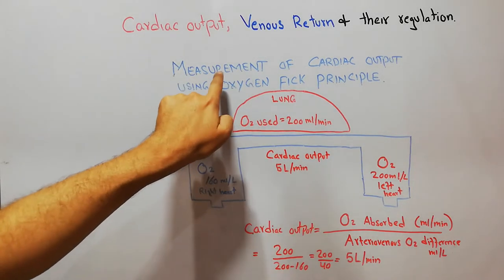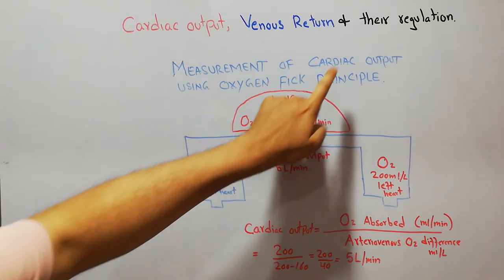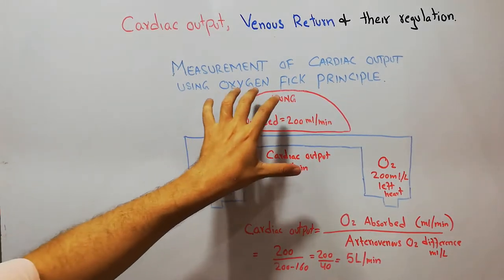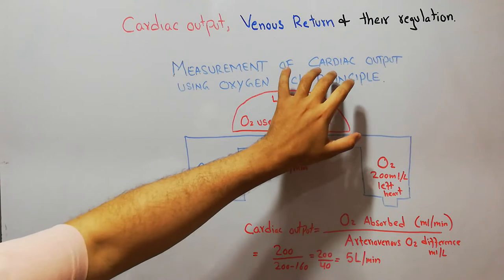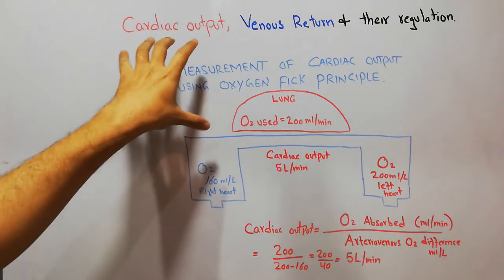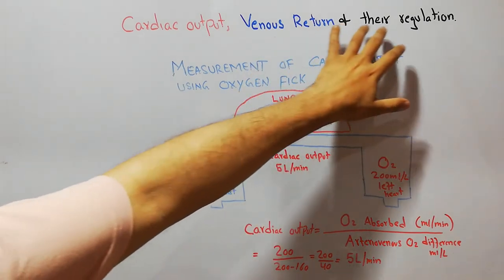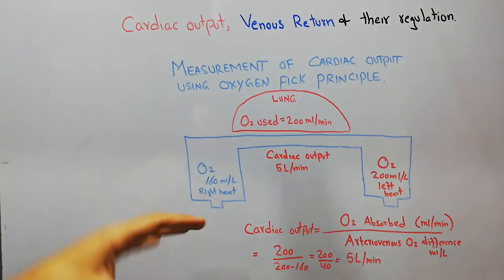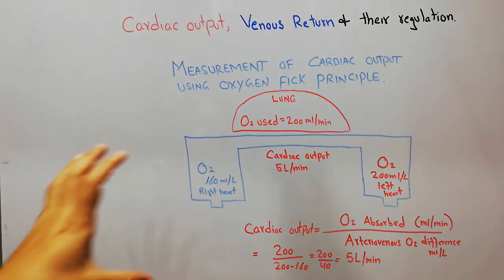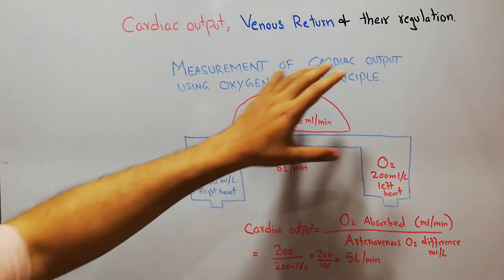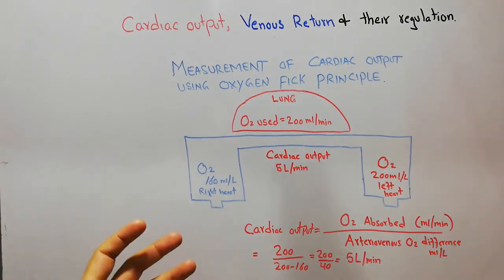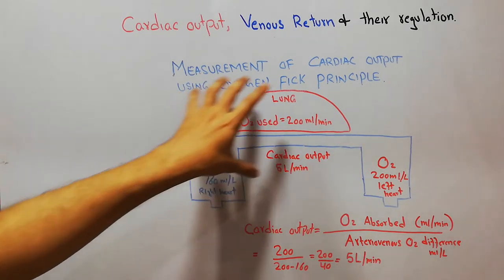Today in this lecture we are going to discuss the measurement of cardiac output using the oxygen Fick principle. This is going to be our last lecture about cardiac output, venous return, and their regulation. We have discussed cardiac output, venous return, and their regulation in detail, and now finally we are discussing how to calculate the cardiac output. The oxygen Fick principle is a very simple method for calculation of cardiac output.